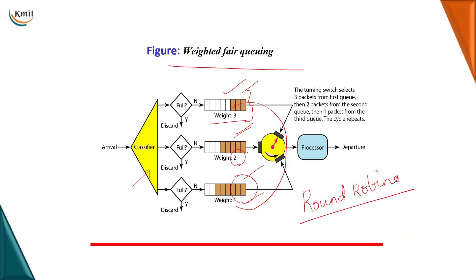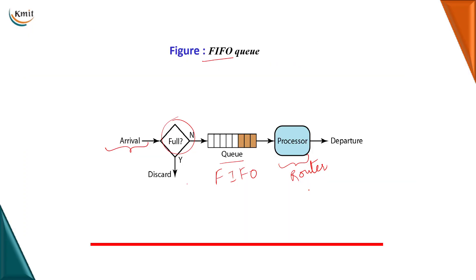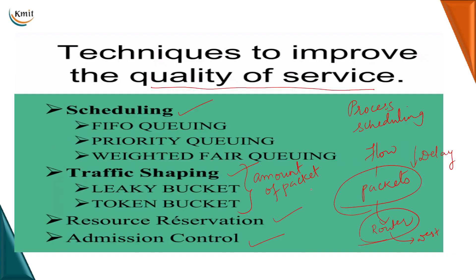Using all these mechanisms, we try to improve the quality of service. Quality of service is basically the services that a flow would like to attain. The techniques to improve quality of service are scheduling — in which the best scheduling is weighted fair queuing — then traffic shaping where we use the token bucket algorithm, which is more optimized and efficient than leaky bucket algorithm. Then we do resource reservation and admission control for improving the quality of service. Thank you.